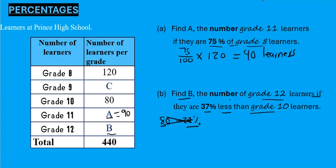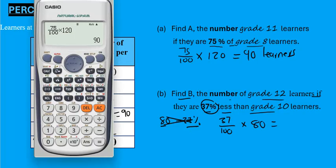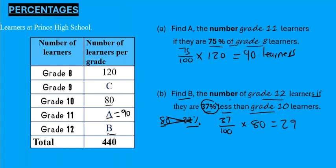Apply the golden rule. We've got 37%, so write it as a fraction — put it over 100 — and multiply by the number of grade 10 learners, which is 80. This gives us 29.6 learners. But learners cannot be continuous; people can only be discrete. So we round this off to 30 learners. So 37% represents 30 learners.